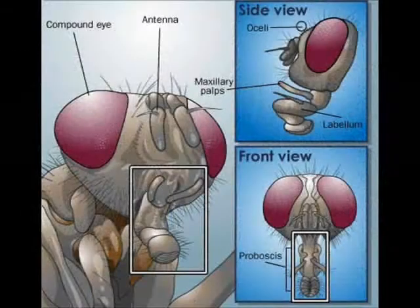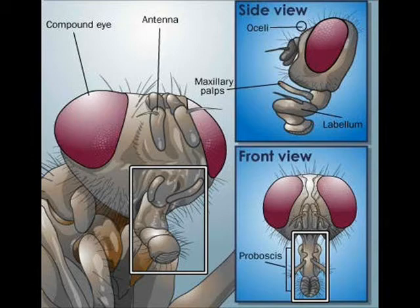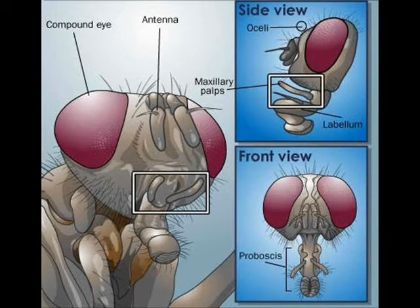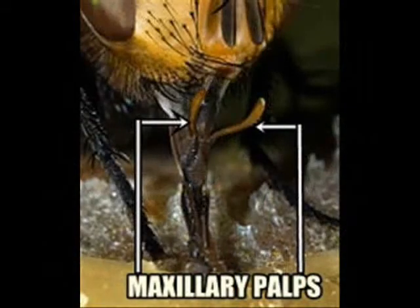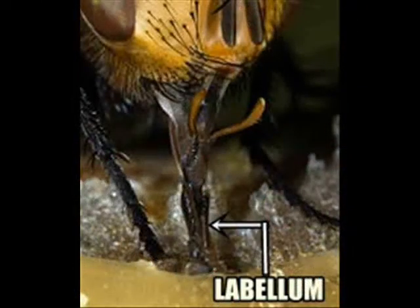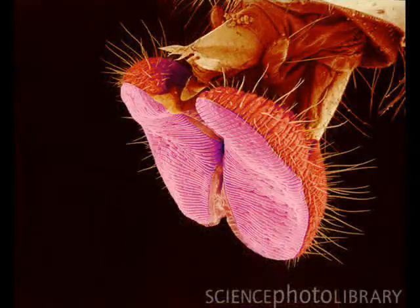For tasting and consuming meals, the insect uses its proboscis, a plunger-like appendage that extends from the bottom of the head. Two small antennae-like structures called maxillary palps allow the fly to taste its food. The end portion of the proboscis, called the labellum, terminates in a spongy mouth where the fly slurps its food.